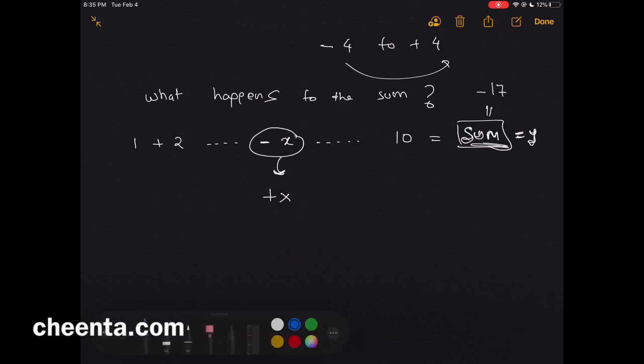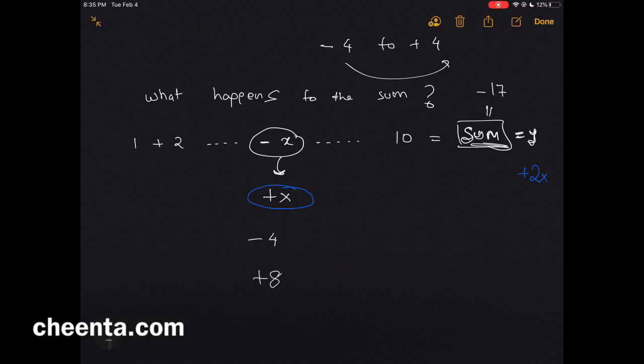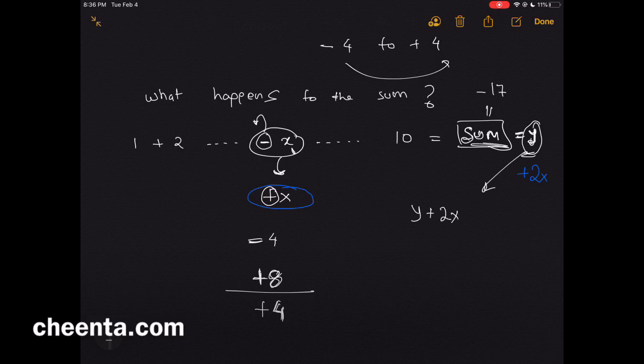I will convert this negative x into positive x. Notice what happened—we just added 2x to the sum. Why? The only way you can do this is if you add positive 8 to this value of negative 4. The output becomes positive 4. So converting this negative sign into this positive sign means you are actually adding 8 to the sum of these numbers, to the value of y. So every time you convert a negative sign into a positive sign, you are actually adding double of that number to the initial sum value. So you have y plus 2x.